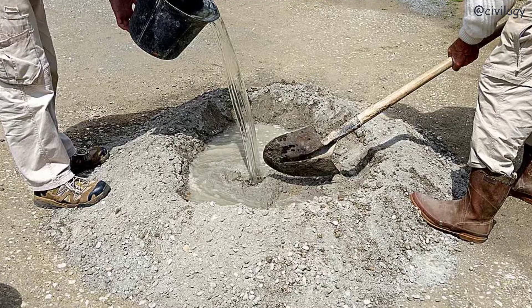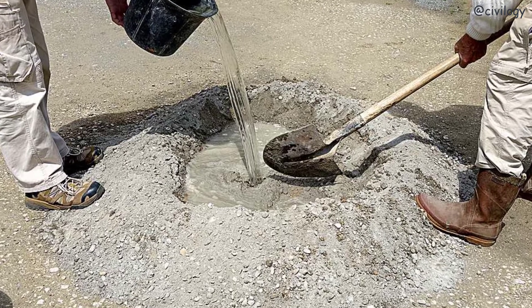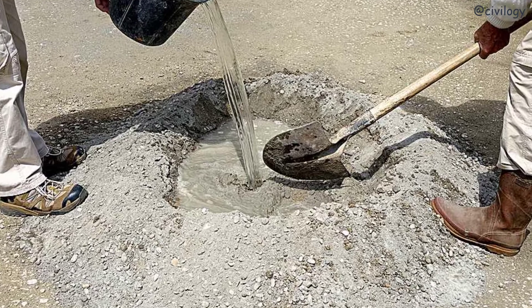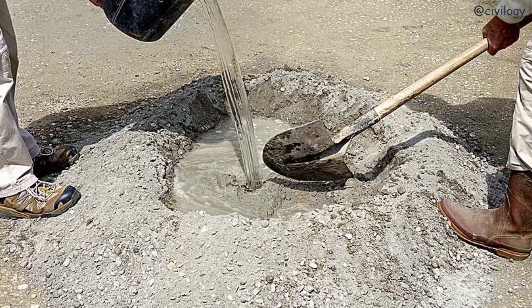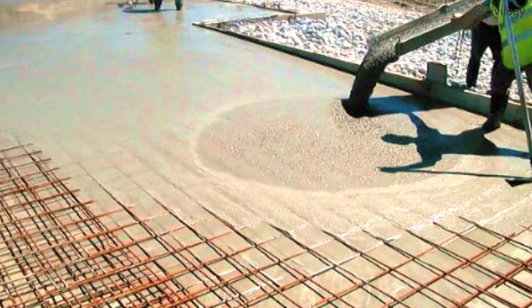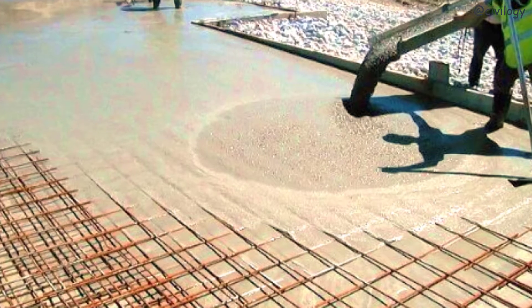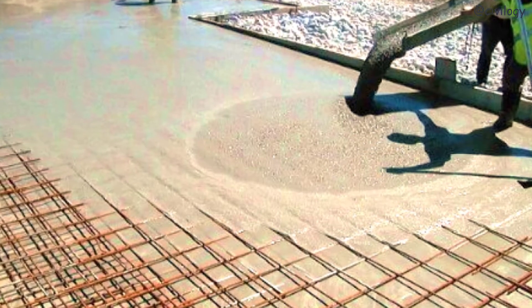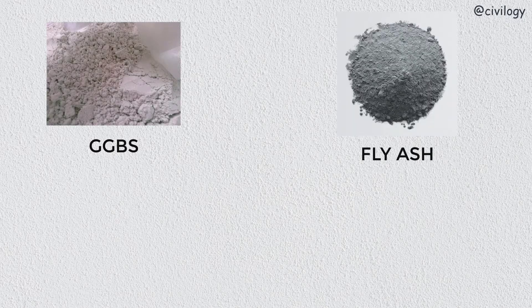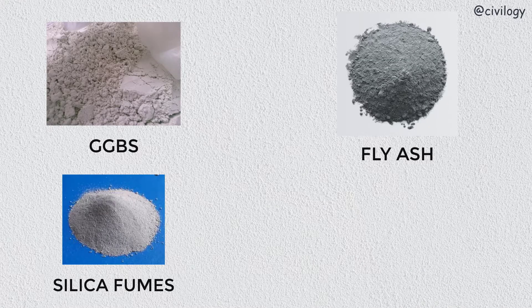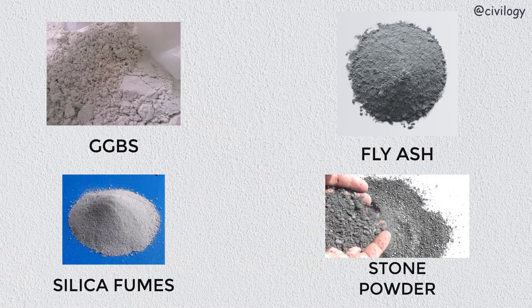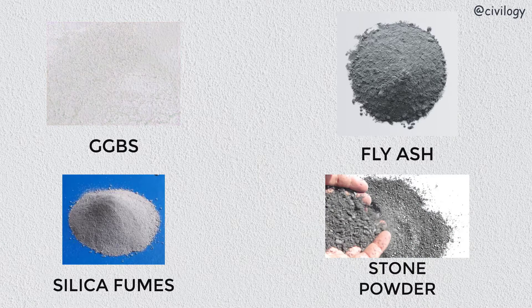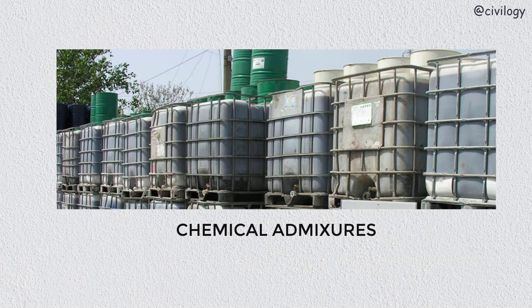Next, water — the quality of water used is the same as that followed for reinforced concrete and pre-stressed concrete in construction. Next, mineral admixtures — the mineral admixtures used can be varied based on the mix design and properties required. Generally we use GGBS, fly ash, silica fumes, stone powder, and others. Next, chemical admixtures — new generation super plasticizers are commonly used in SCC mix design.